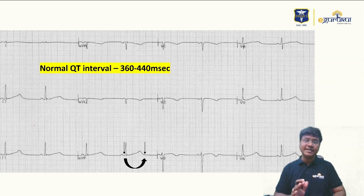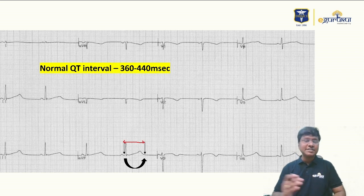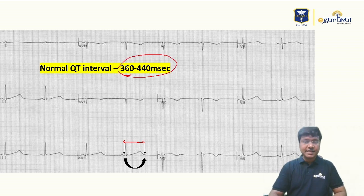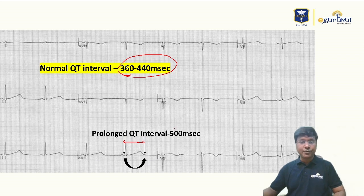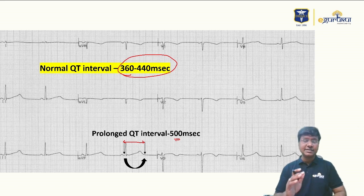Looking at the ECG: the rhythm is sinus rhythm with a normal P-QRS-T complex, but the QT interval is prolonged. The normal QT interval is 360 to 440 milliseconds, but this patient has a prolonged QT of nearly 500 milliseconds.